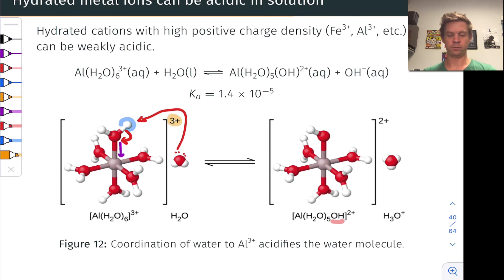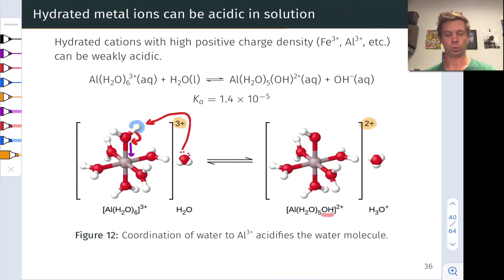We've gone from 3 plus overall to 2 plus overall as the complex has accepted an additional electron, and the positive charge has sort of shifted over to the water molecule in hydronium. And notice here the Ka is actually pretty substantial. If you do a pKa calculation on this, you'll see that this is comparable to acetic acid in pKa. So these hydrated metal cations can be quite acidic in water.